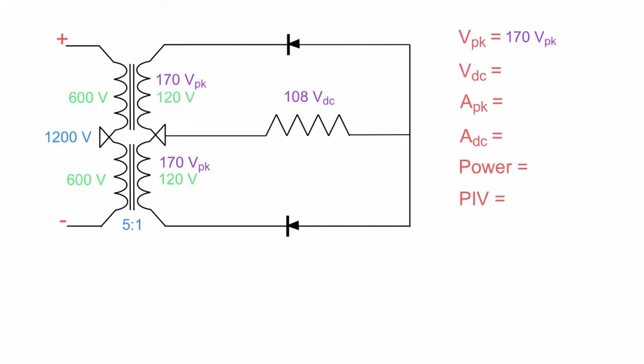Now that we have 170 volts peak here, we can determine what our DC value is by taking our peak value times 0.637 to get our DC value. Remember, it is peak times 0.637 to get DC. So I end up with 108 volts DC across the load resistor. So we get that drawn in there.